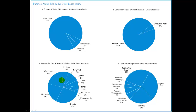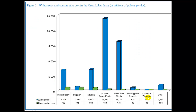Looking at consumptive water use, the big ones are irrigation and public water supply, which together account for a little over half of all consumptive water use. Industrial water use is mostly non-consumptive, though some industrial operations do engage in consumptive use. Overall, energy providers withdraw the most water in the Great Lakes, but the majority of that water is non-consumptive — used just for cooling and then returned.